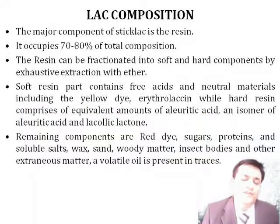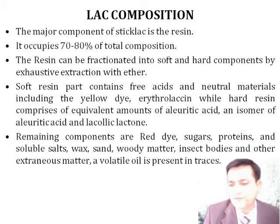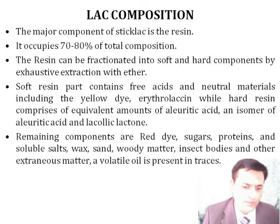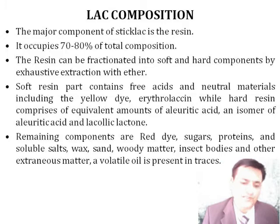The major component of stick lac is the resin, which occupies 70 to 80 percent of total lac composition. The resin can be fractionated into two parts: soft and hard components. The soft resin consists of free acids and neutral materials including the yellow dye, erithroritrin. The hard resin consists of equivalent amounts of aleuritic acid — an isomer of aleuritic acid — and laccaic lacterin. Other components of lac are red dye, sugars, proteins, soluble salts, wax, woody insect bodies, and volatile oil in small amounts.